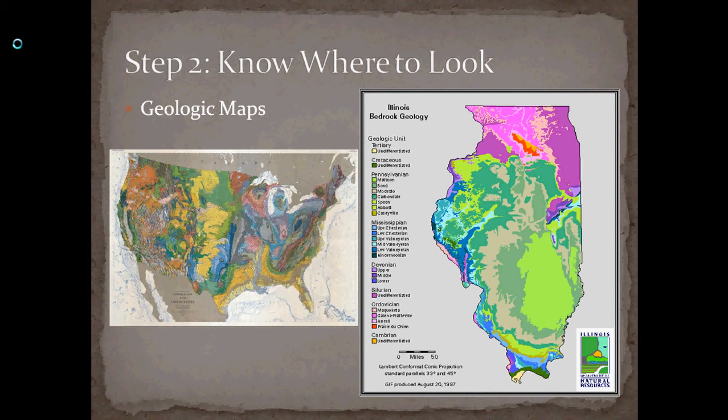So once you know what you're looking for, you have to know where to look. Geologists and paleontologists use two types of maps to figure this out.